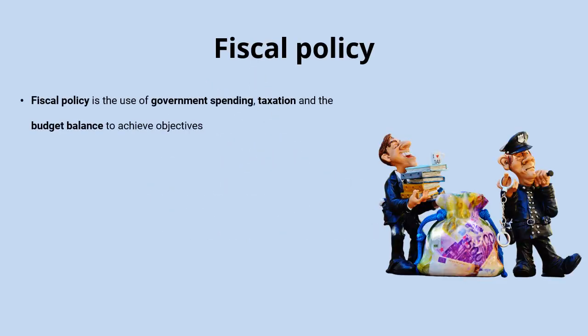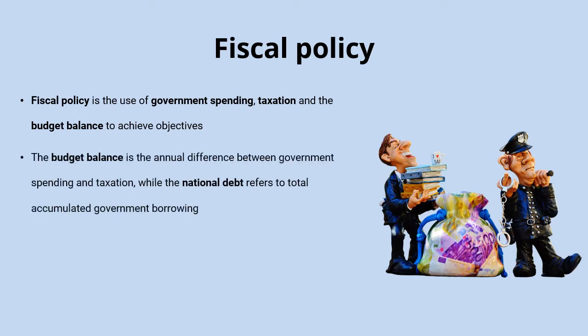Fiscal policy is the use of government spending, taxation and the budget balance to achieve economic objectives. When we talk about the budget balance, we mean the annual difference between government spending and taxation. So if government spending in any one year was 800 billion pounds, but we've only got 750 billion pounds coming in from taxation, then the budget deficit would be 50 billion pounds.